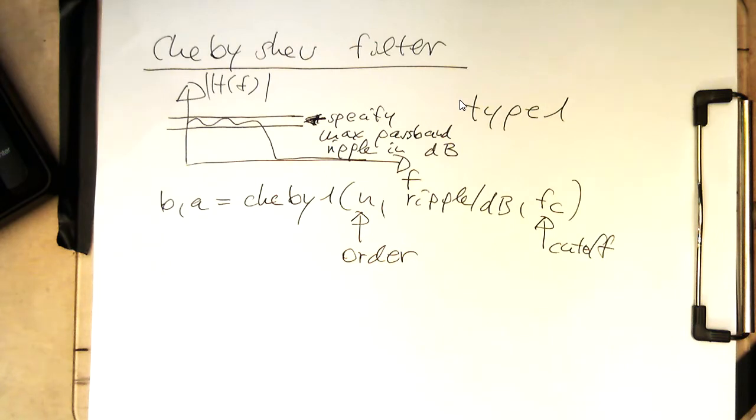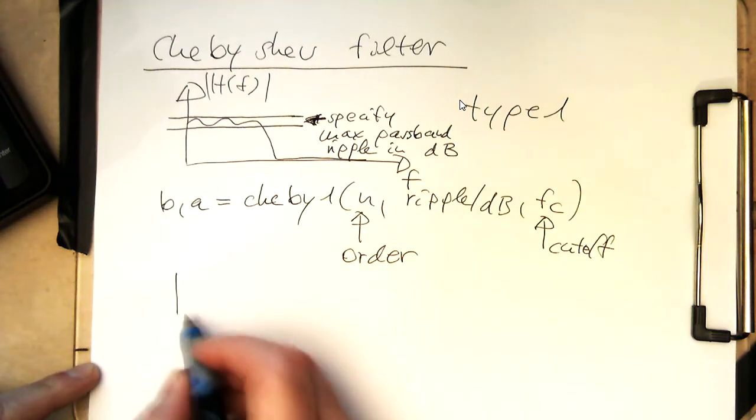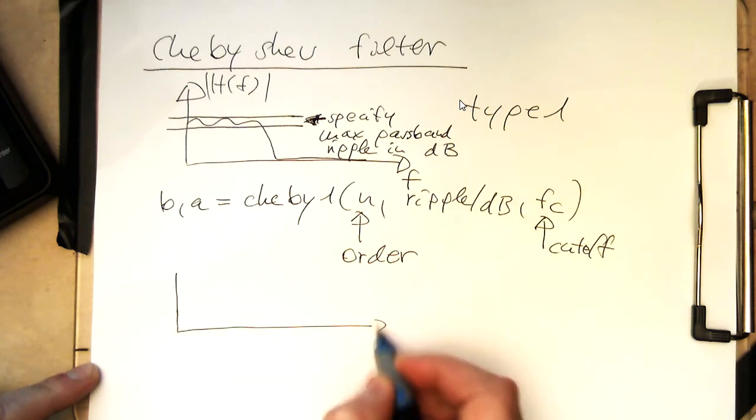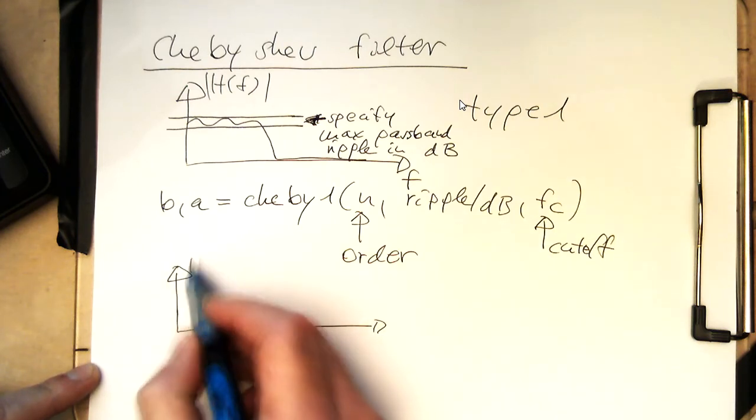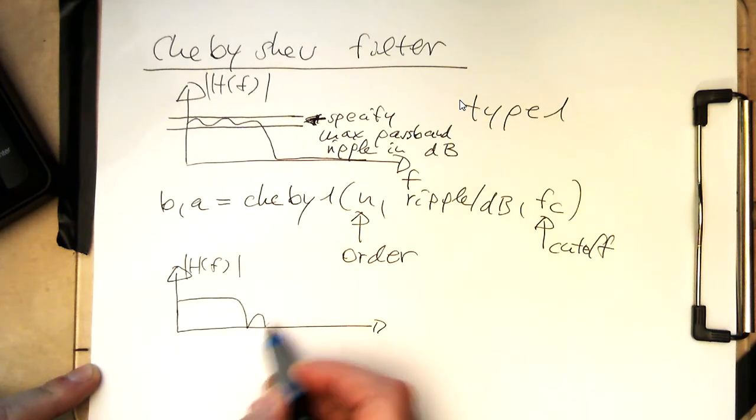So now then the opposite is also possible here. So therefore that, so therefore if we want to control the ripple in the stopband. So if we, again, H of F and, and we would like to control how these, how deep these bumps go here.